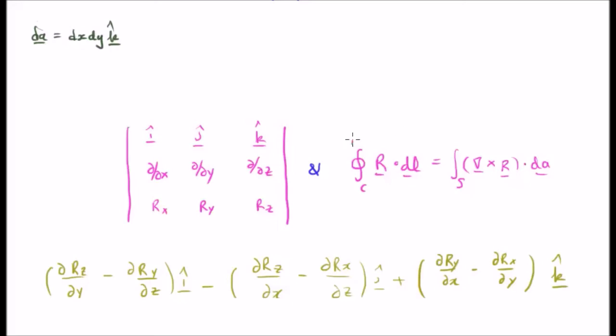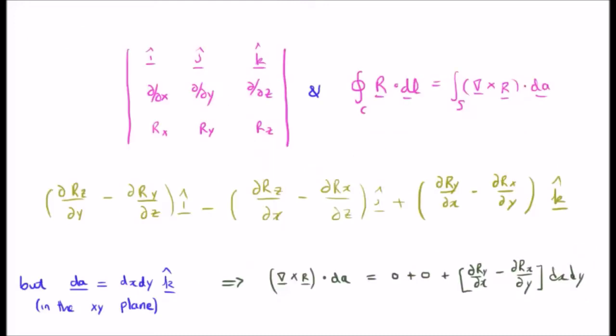So I've rewritten Stokes' theorem here and this is the curl of our vector field r here, or this is about to compute the curl. And I've written the curl of the vector field here. I don't want to get bogged down in the algebra, it's something I'm sure you can compute yourself. The point to note here is that we're taking the curl and then we're taking the dot product of that with the vector area.